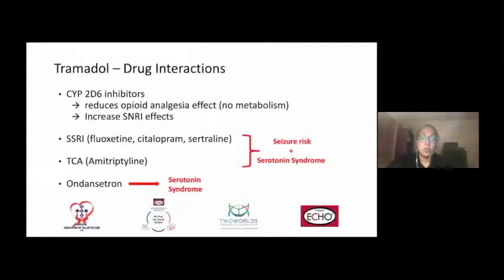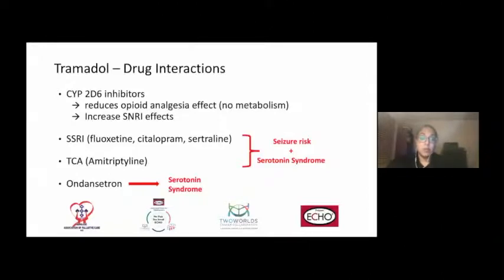TCAs such as amitriptyline, which are commonly used as adjuncts for pain management or mood management in our patient population, would be important to remember. Ondansetron is also a commonly available drug affecting serotonin mechanisms for nausea and vomiting, and that is something to keep in mind when used in combination with tramadol, due to the increased risk of serotonin syndrome.